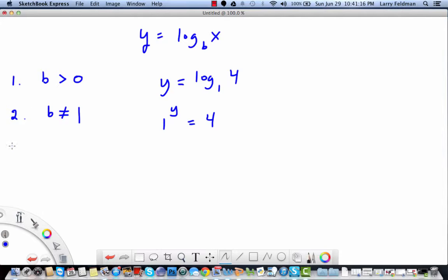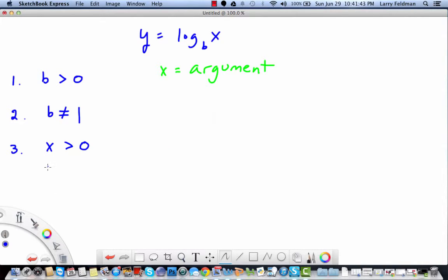Restriction number 3 says that x must be greater than 0. And x, I just want to introduce a new term here, x is called the argument. I'm going to be using this term in other log videos, so I wanted to mention it here. The argument must be positive. So again, let's look at a counter example: y equals log base 4 of negative 16.